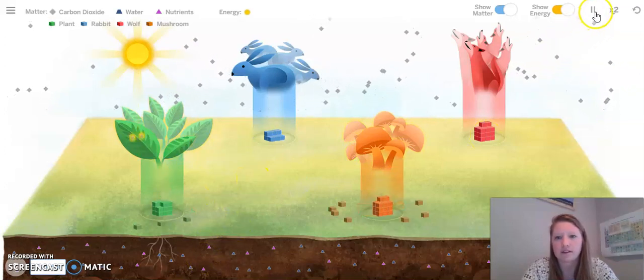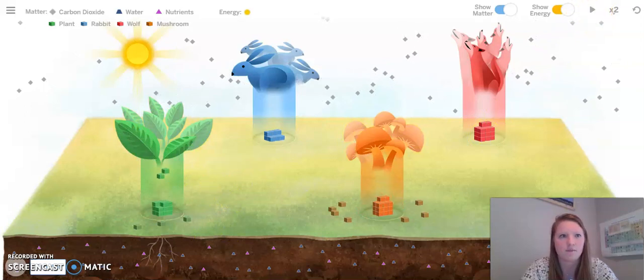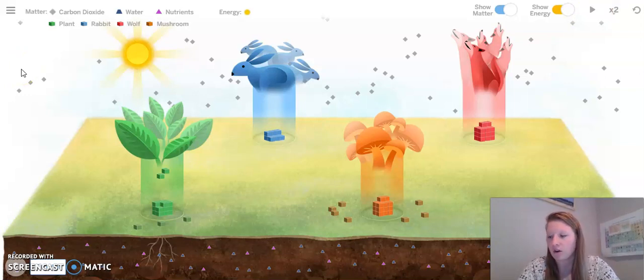We are going to stop the simulation there. Now that we have watched the simulation and made some observations, you are going to answer the questions in page 34 of your Ecosystem Restoration Workbook, or you are going to answer the same questions in page 4 of your Chapter 2, Lesson 1 Activity Workbook. And that will end Activity 3.